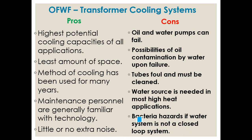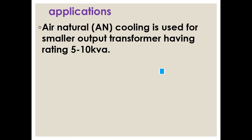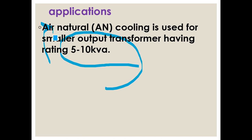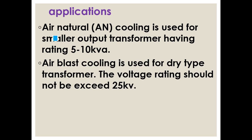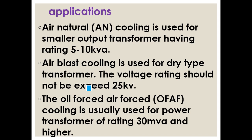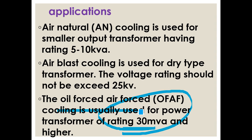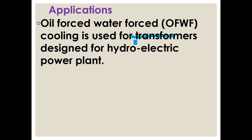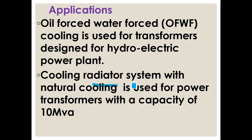Application summary by capacity: Air natural (AN) cooling is used for 5 to 10 kVA transformers. Forced air cooling is used for capacities greater than that, with voltage ratings typically not exceeding 25 kV, so 11 kV transformers use this directly. OFAF is used for 30 MVA and higher applications. OIFWF is used in hydroelectric power plants because water availability is there. Cooling radiator systems with natural cooling are used for power transformers with 10 MVA and above.